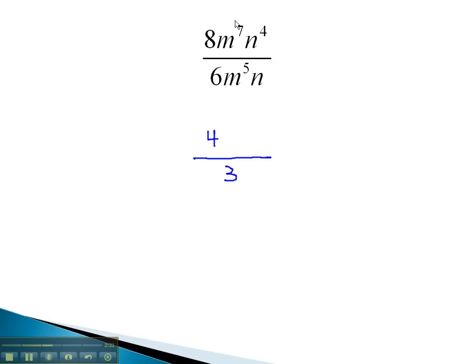On the m's, we will subtract the exponents. The exponents, 7 minus 5, gives us m squared. Because the answer is positive, we leave the m squared in the numerator.